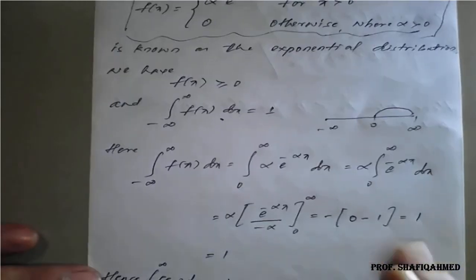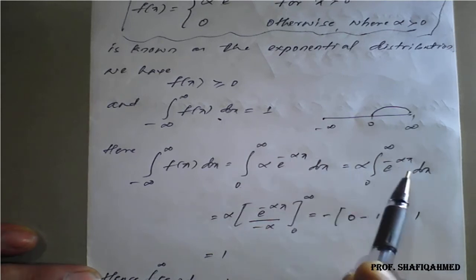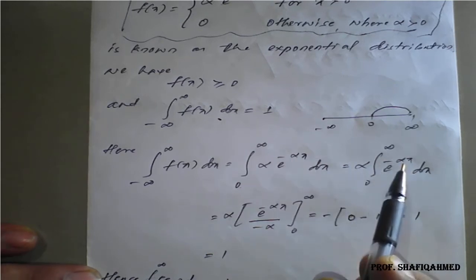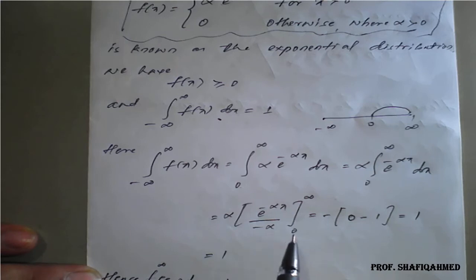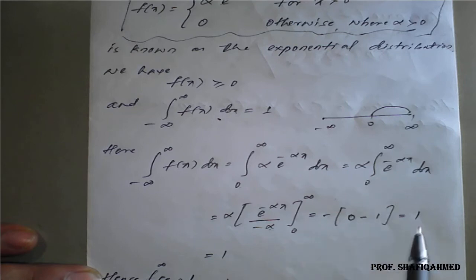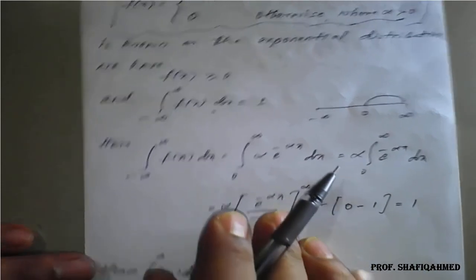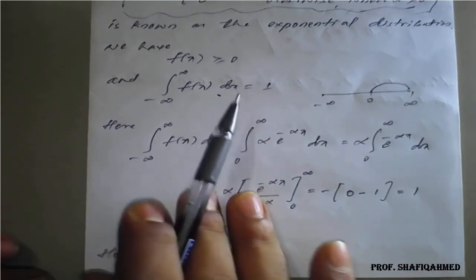So the integral is from 0 to infinity of α·e^(−αx) dx. Alpha is a constant, so we keep it outside. Integrating e^(−αx) with respect to x gives e^(−αx) divided by (−α), evaluated from 0 to infinity. The α and α cancel. Applying the upper limit: e^(−∞) = 0; applying the lower limit: e^0 = 1. So the result is 1, and the second condition holds for the exponential distribution.